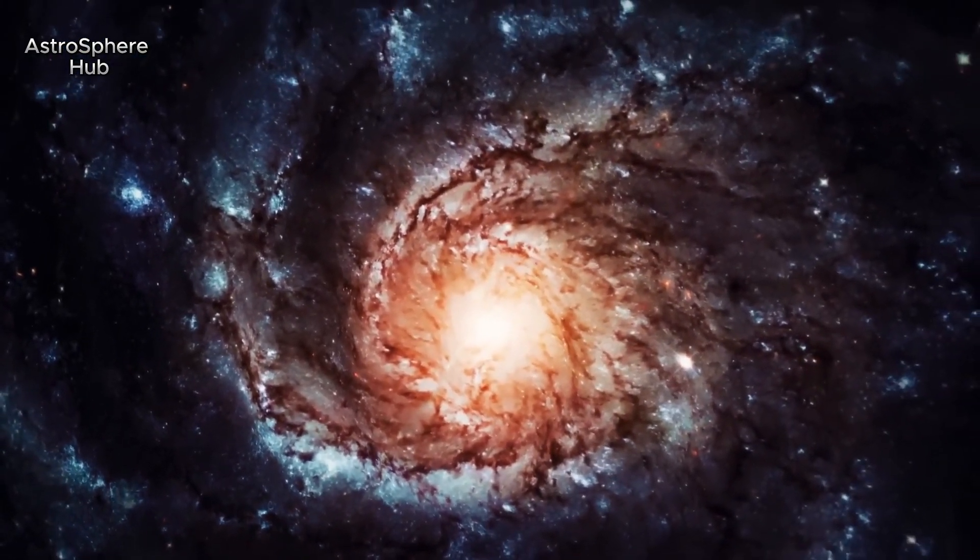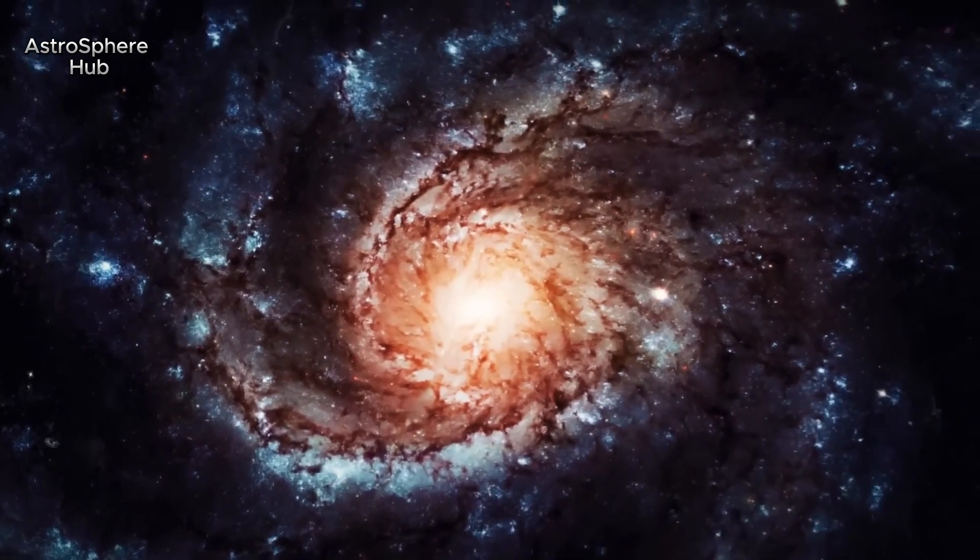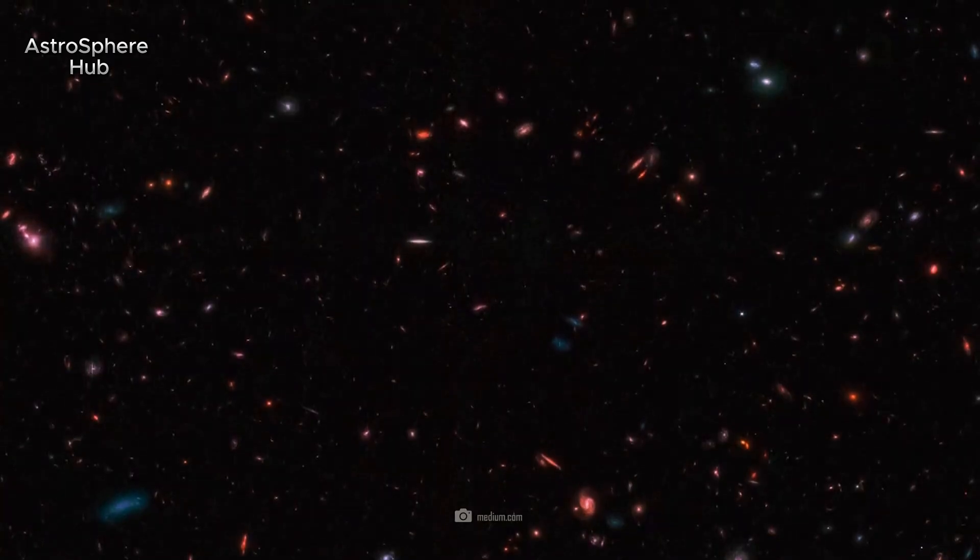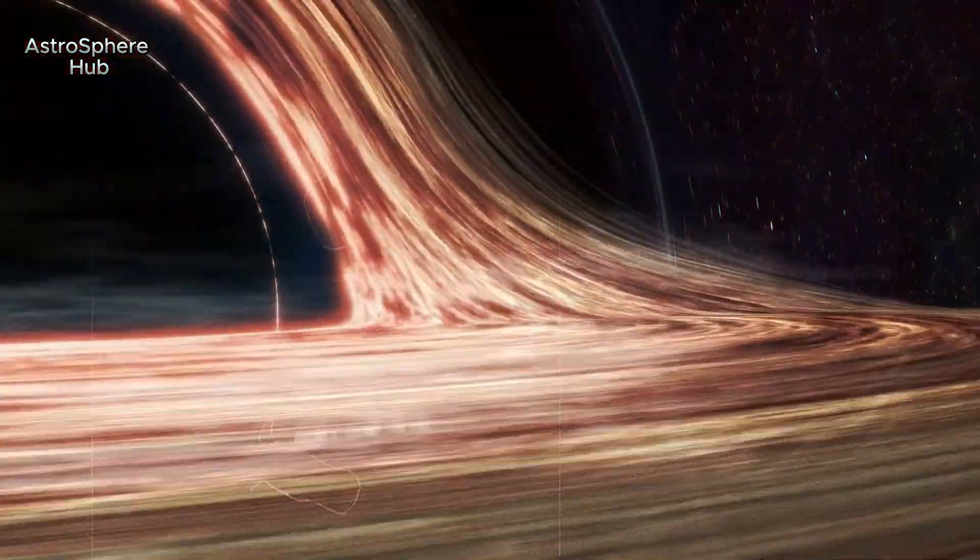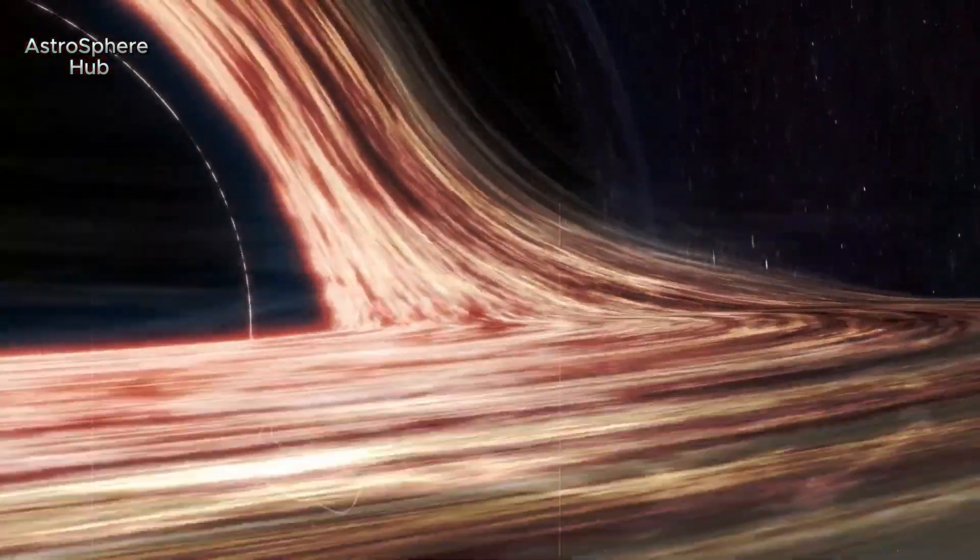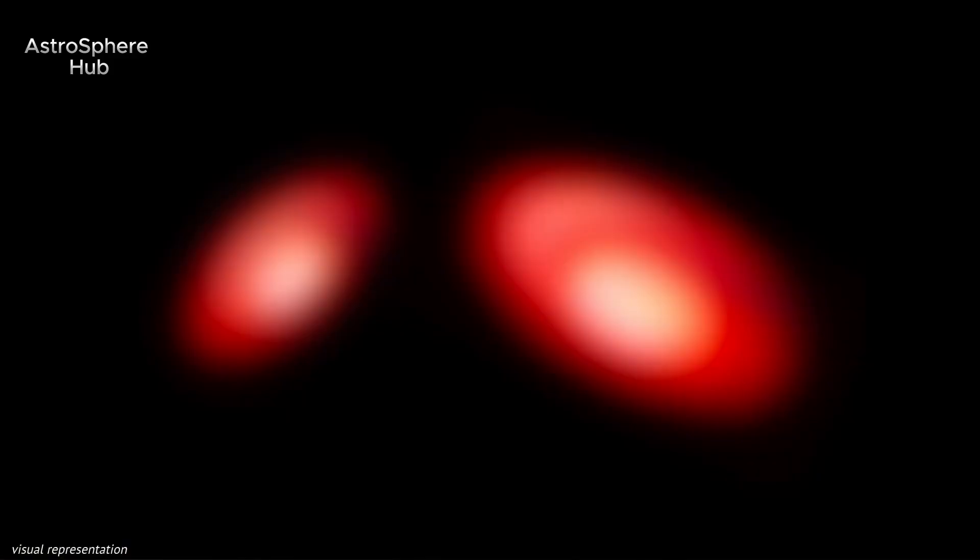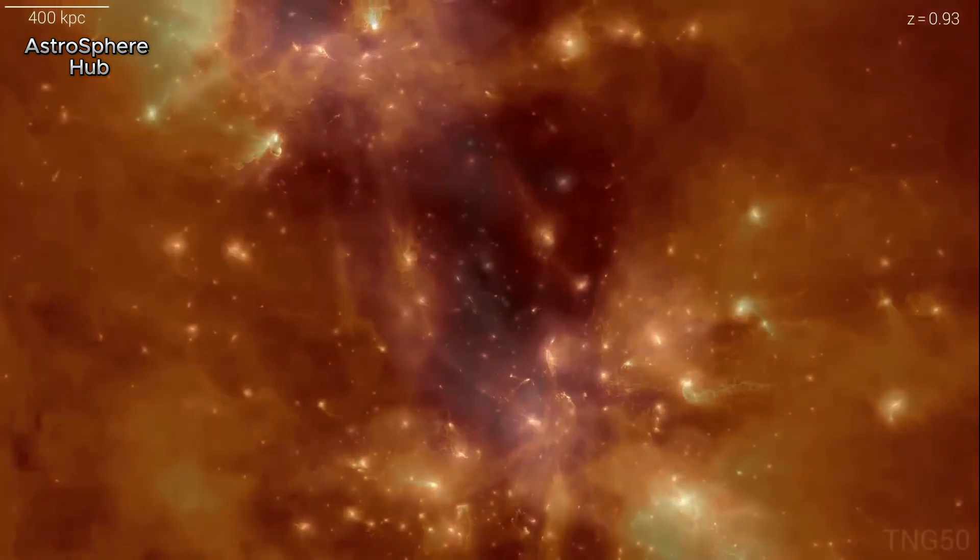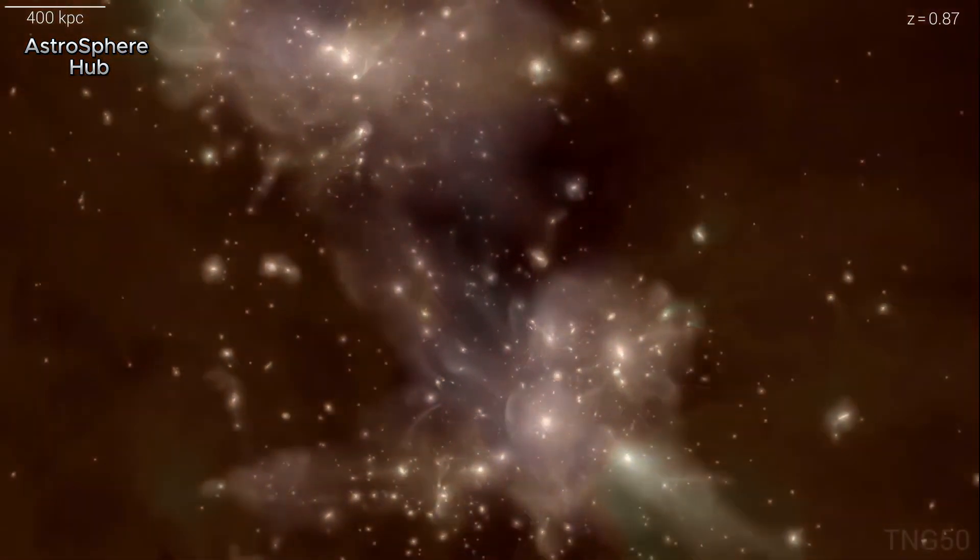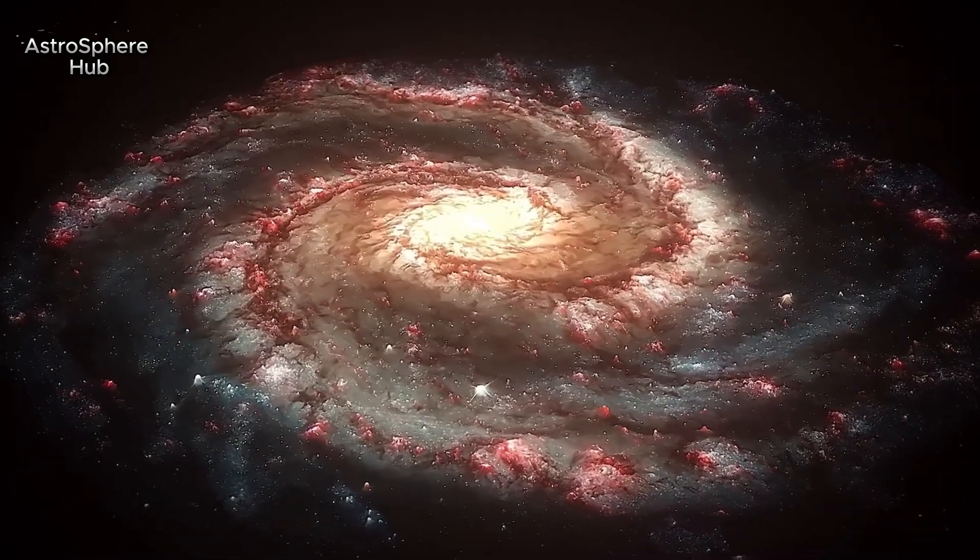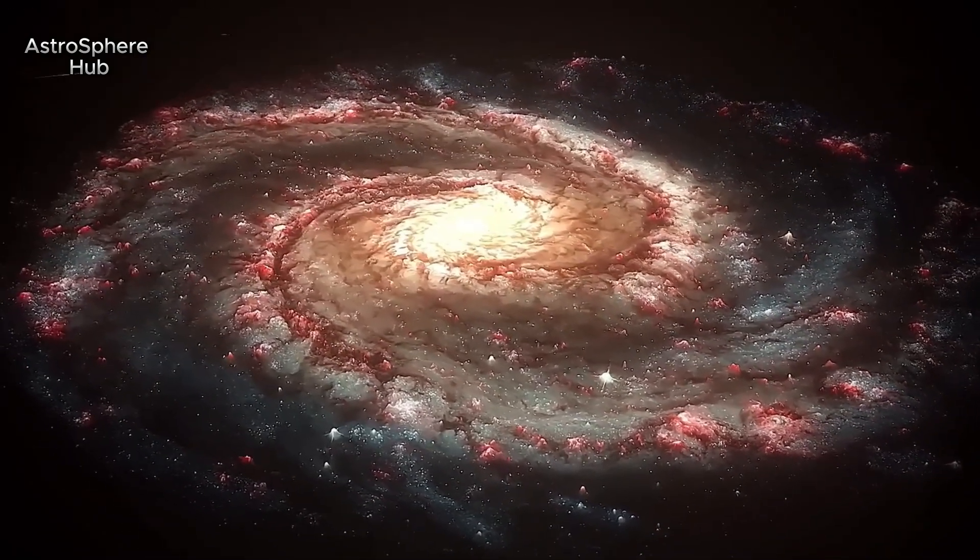The Big Bang cannot possibly have taken place 13.8 billion years ago if, only 250 million years after it, there were already galaxies on the move in the cosmos, which, as Kaku points out, are larger than our Milky Way. According to our current understanding, galaxy evolution is a complex process that takes billions of years to produce galaxies like our Milky Way. Webb discovered dozens of these ancient, beautifully shaped, and large galaxies. Each one poses a puzzle to scientists.